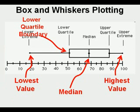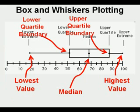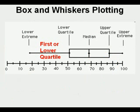The median of the upper half of the data is the upper edge of the box where the right whisker starts. This is the upper quartile boundary. In this way the box and whiskers plot separates the data into four quarters, what we call quartiles.